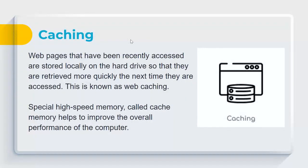Caching also affects performance: web pages recently accessed are stored locally on the hard drive so they load faster next time — this is web caching. Special high-speed cache memory built into the CPU also helps improve overall performance.